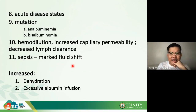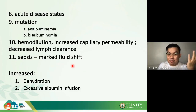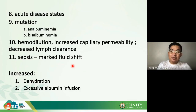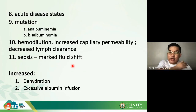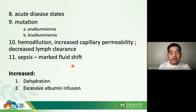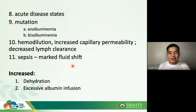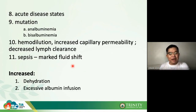Bisalbuminemia and sepsis can also decrease albumin due to fluid shifts. Importantly, albumin increases in only two situations: dehydration — where there is very little water in the body so proteins are highly concentrated — and excessive albumin infusion.